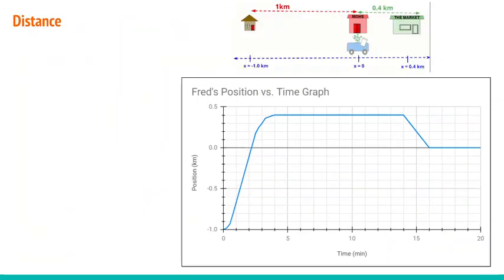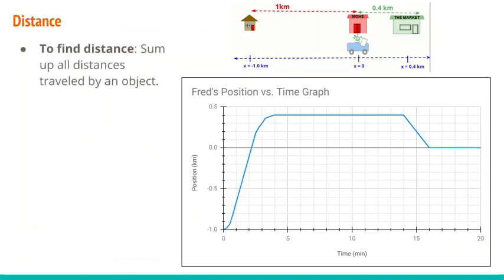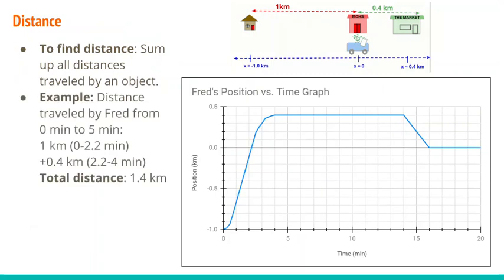We can get the distance he's traveled using the position versus time graph. To find distance, we add up all the distances traveled by an object. For example, what is the distance traveled by Fred from 0 to 5 minutes? From 0 to about 2.2 minutes, he travels from negative 1 kilometer to 0 kilometers — that's a distance of 1 kilometer. Then from that time until 5 minutes, he goes from position 0 to position 0.4, a distance of 0.4 kilometers. So his total distance is 1.4 kilometers.